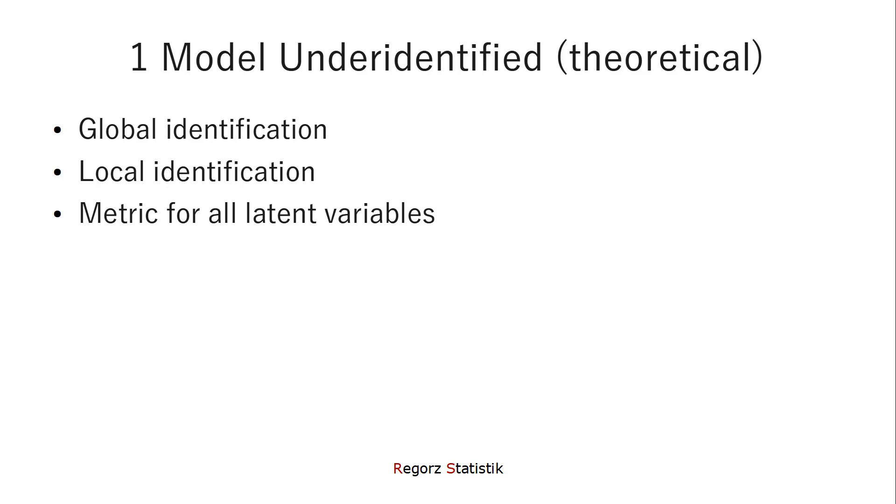The last problem mostly arises if you override the default values. Because normally, by default, the first indicator for each latent variable will get a loading of one. But if you override that but forget to assign another variable value of one, then this could be the problem. And the possible solution, of course, is change the model so you have a model that is theoretically identified.